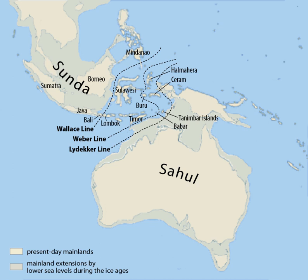Island area and number of terrestrial mammal species are positively correlated, with the largest islands of Sundaland having the highest diversity.